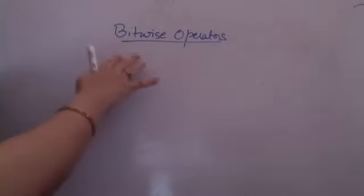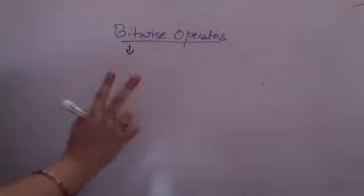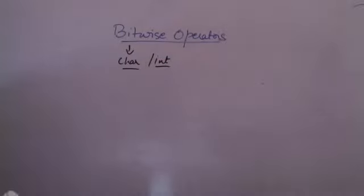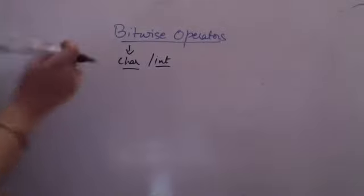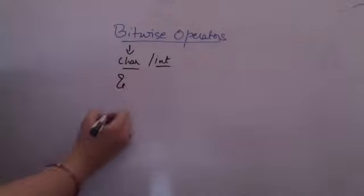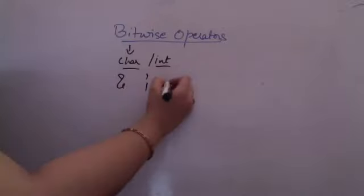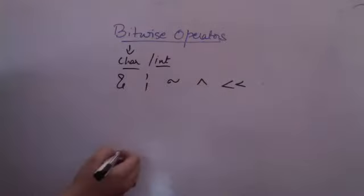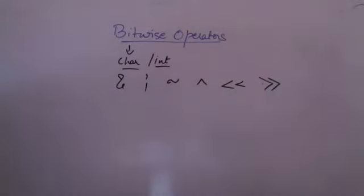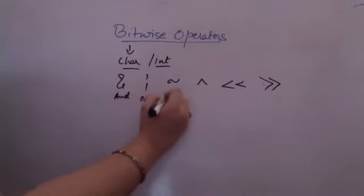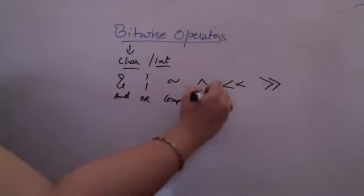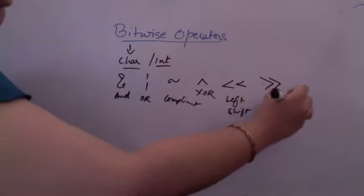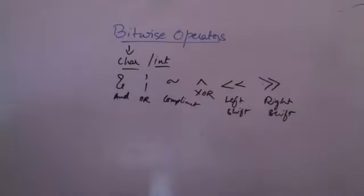When we are talking about bitwise operators, they only work on two kinds of data — character and integer variables. They will not work with any other data type. The bitwise operators are: bitwise AND, bitwise OR, bitwise NOT (negation or complement), bitwise XOR, left shift, and right shift. So these are the kinds of bitwise operators which are available.